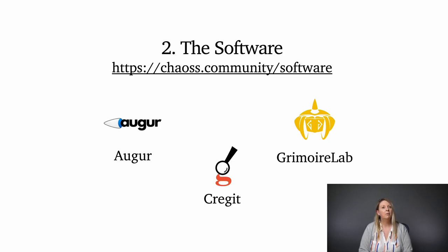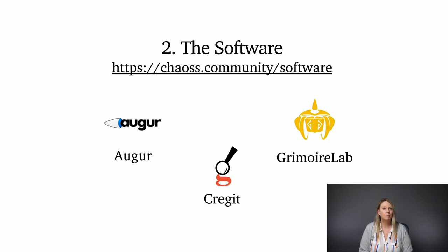Augur development is led by the University of Missouri and provides a prototyping playground for trying new ideas around metrics. GrimoireLab is a set of free open source software tools for software development analytics. They gather data from many systems supporting development, such as Git, GitHub, GitLab, Jira, Bugzilla, Garrett, Stack Overflow, and more. GrimoireLab development is led by Vitergia and provides a stable production-ready platform that is used by open source projects and Fortune 100 companies.